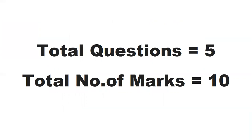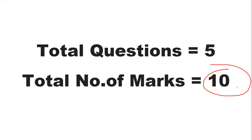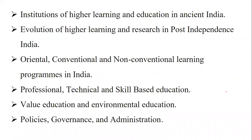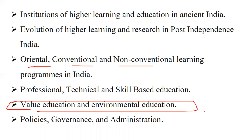The unit we are going to cover is Higher Education System. This unit consists of five questions, each carrying two marks, so the total marks are ten. The syllabus includes: institutions of higher learning in ancient India, evolution of higher learning and research in the post-independence period, oriental, conventional and non-conventional learning, professional, technical, and skill-based education, and value education and environmental education.